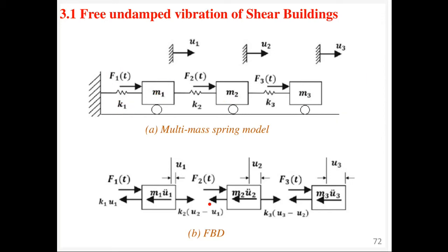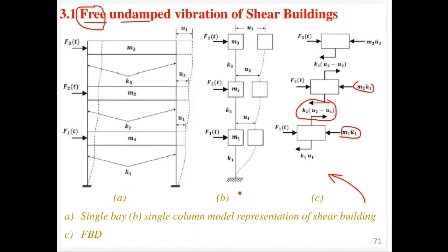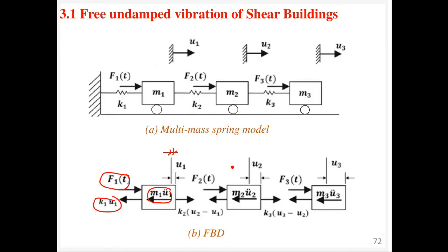Further, you can separate into free body diagrams so you can see the forces acting on each mass. For the first lumped mass M1 we have: the inertial effect, the restoring force due to spring stiffness K (the column stiffness), and the externally applied force. The horizontal displacement is measured at each floor level as U1, U2, U3. Forces from K2 act on both floor levels one and two in opposing directions.